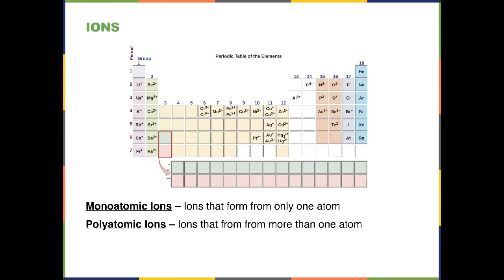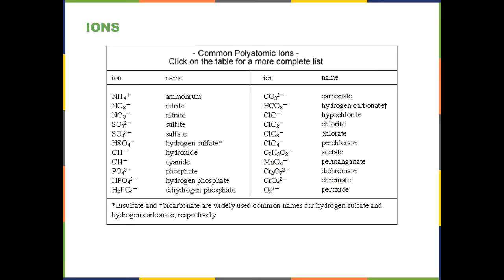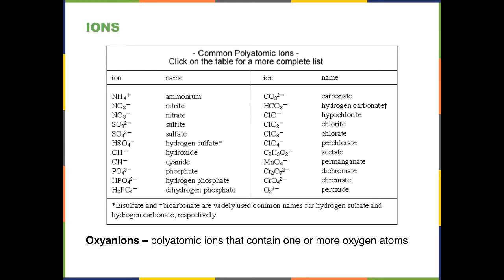There are also polyatomic ions, which are made up of more than one atom. For example, the ammonium ion NH4+ is positively charged. Almost all other polyatomic ions are negatively charged. There is a table in the textbook listing the polyatomic ions you will be responsible for memorizing. Oxyanions, or oxy ions, are polyatomic ions that contain one or more oxygen atoms. Most polyatomic ions shown in the table are also oxyanions, though cyanide and ammonium do not contain oxygen.